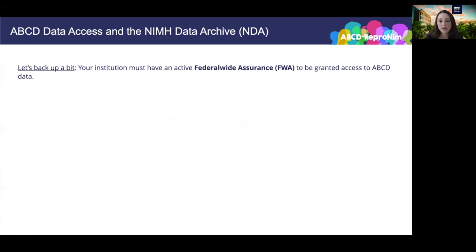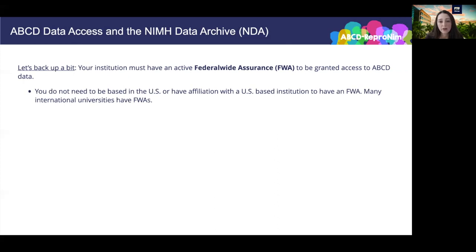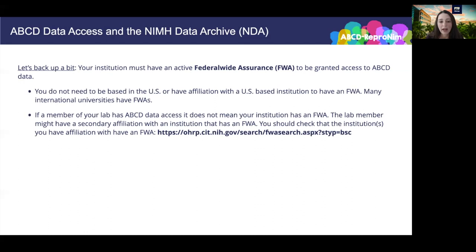The NDA website includes a series of excellent tutorials designed to explain these processes, and we have provided a Google Doc associated with this course with answers to some frequently asked questions. We've received multiple questions about this process, so let's clarify a few things. First, you do not need to be based in the US or have affiliation with a US-based institution to have an FWA — many international universities do have FWAs. However, if a member of your lab has ABCD Data Access, it does not mean that your institution has an FWA. This lab member might have a secondary affiliation with an institution that does have an FWA, and perhaps you do not share this secondary affiliation. We recommend that you check with the institutions that you have affiliation with to see if they have an FWA.